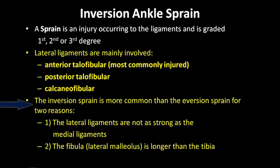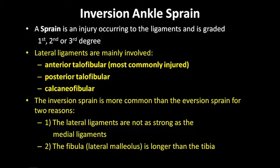The inversion sprain is more common than the eversion sprain for two reasons. The lateral ligaments are not as strong as the medial ligaments, and the fibula — the lateral malleolus — is stronger than the tibia, not allowing for excessive eversion movement.